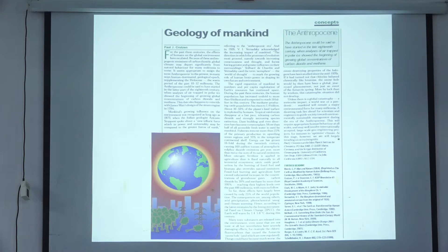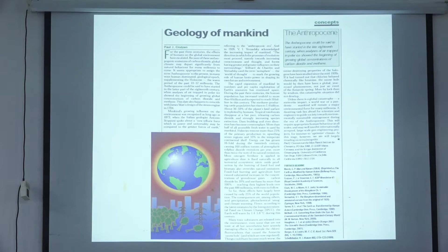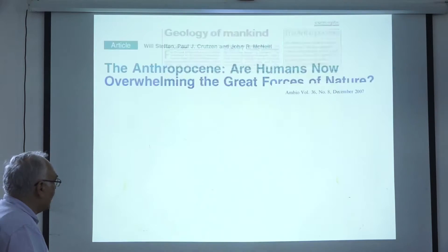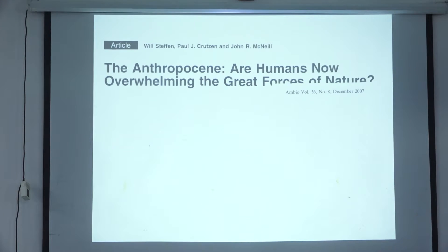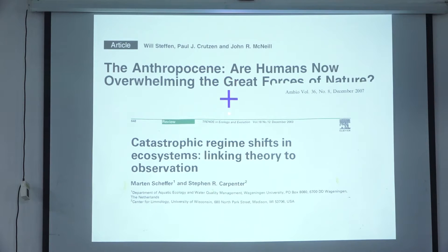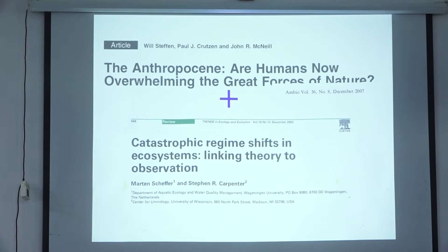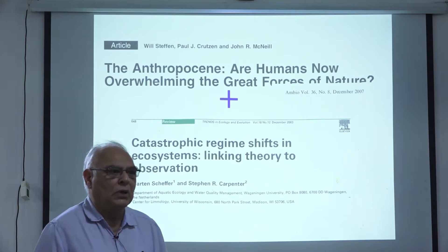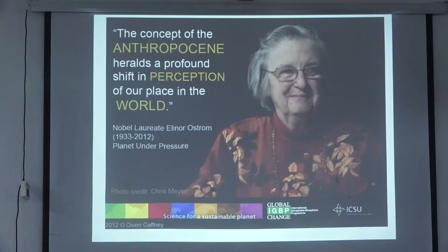The analysis of ice cores and the air entrapped in them led to the notion of increased concentrations, which is why they put the start at 1800. Others followed up — Bill Steffen, Paul Crutzen, and John McNeill wrote in Ambio in 2007: 'The Anthropocene: Are Humans Now Overwhelming the Great Forces of Nature?' Plus another article on catastrophic regime shifts in ecosystems linking theory to observation. These two influential articles from 2003 and 2007 moved the world toward stronger foundations for the Anthropocene concept.